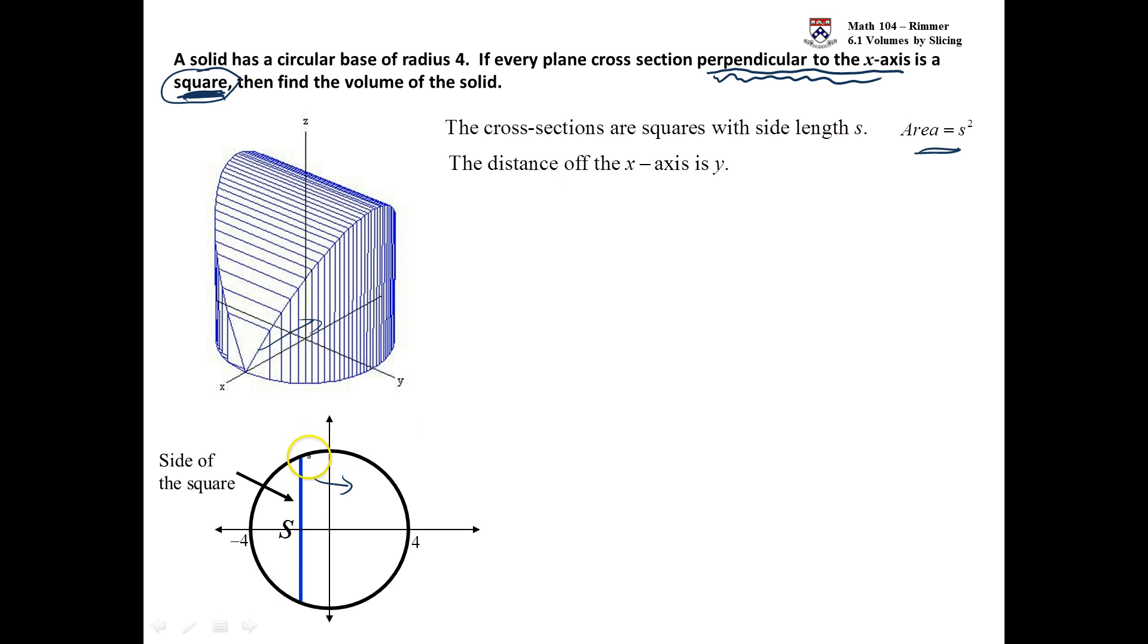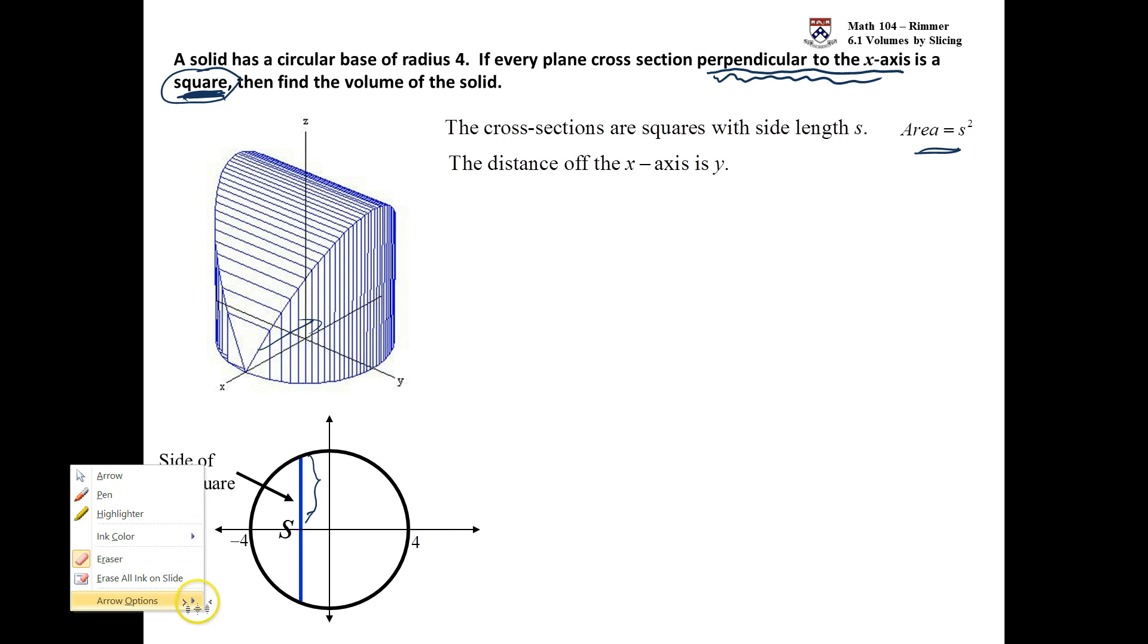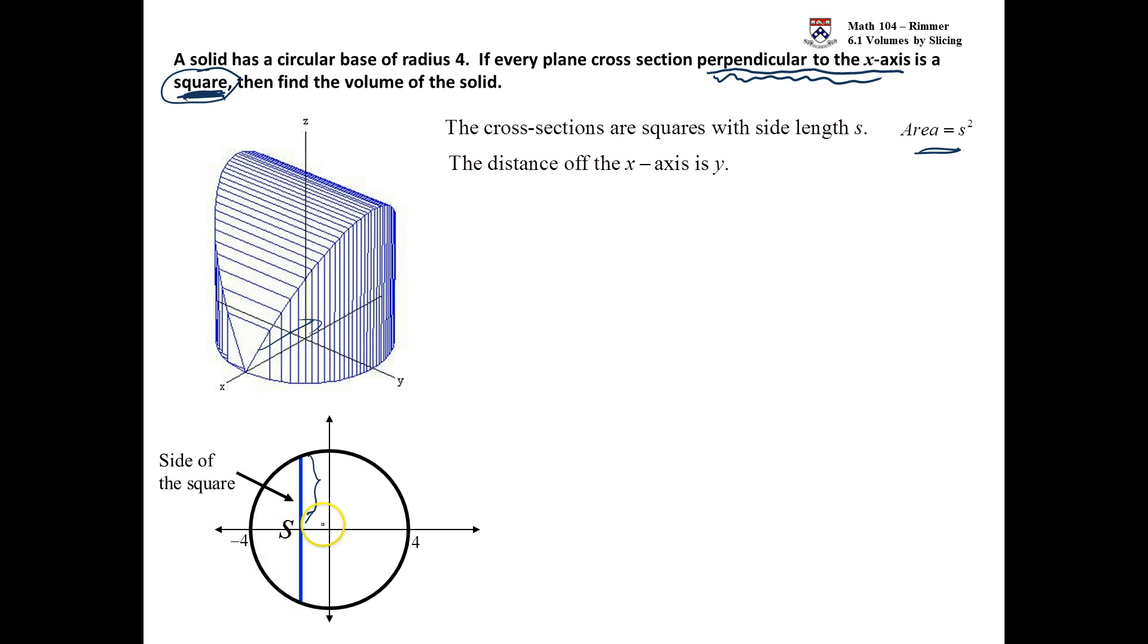This distance off of the x-axis is y. Using symmetry, this distance here would also be y. So we need to figure out exactly what y is in terms of x. We know the equation of the circle is x² + y² = 16. For simplicity's sake, we centered the circle at the origin with radius 4.